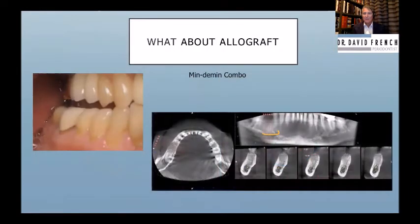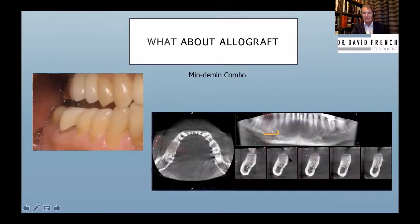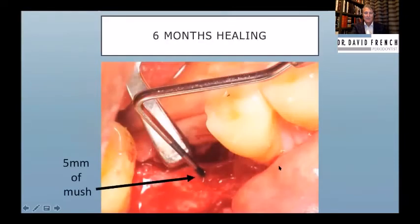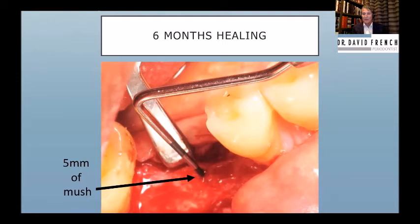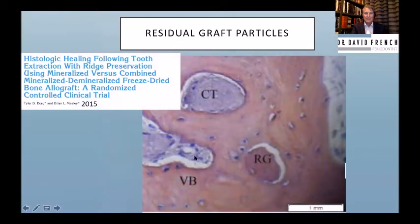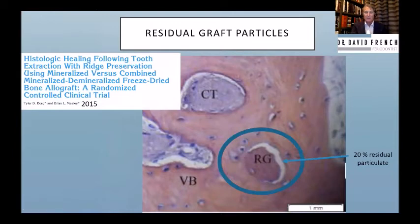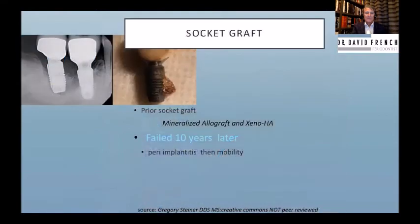What about allograft? Brian Mealy has said the mineralized/demineralized combination is the best material — he's done more histology on this than anyone. We used it on a thin buccal crest to preserve the ridge. On x-ray it looks different, but when we open that up clinically even after six months it's mush — epithelial migration down to the graft means you're not getting bone all the way to the crest. Residual particles can be as large as 1 mm, and 20% of the graft material remains as residual particle.